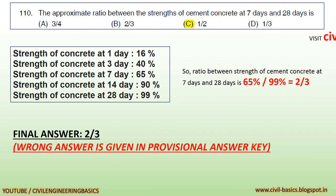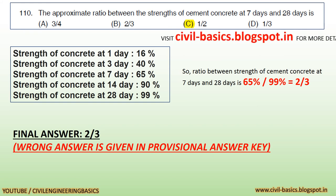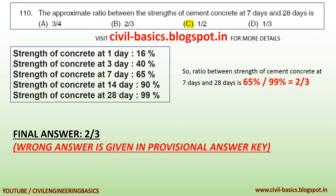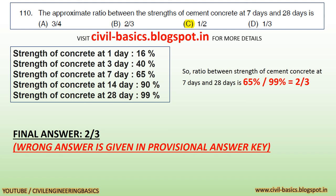Question: The approximate ratio between the strengths of cement concrete at 7 days and 28 days is: a) 3/4, b) 2/3, c) 1/2, d) 1/3. Strength of concrete at 1 day: 16%; at 3 days: 40%; at 7 days: 65%; at 28 days: 99%. So the ratio between strength at 7 days and 28 days is 65%/99% ≈ 2/3. Final answer is 2/3. A wrong answer is given in the provisional answer key. Visit civilbasics.blogspot.in for more details.